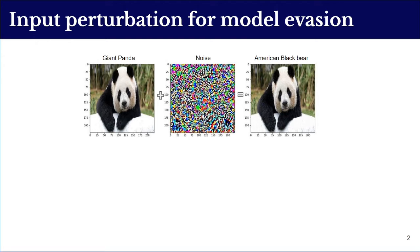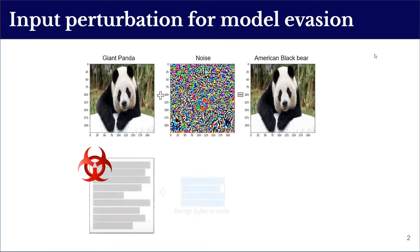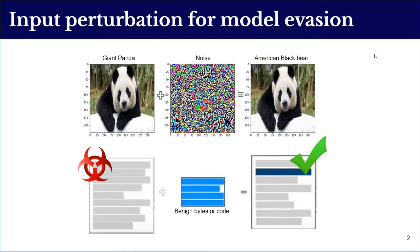Adversarial machine learning has been extensively studied in recent years, and research has shown that even minor input perturbations can lead to successful machine learning evasion attacks. For example, a giant panda can be misclassified as a black bear if an adversary adds studied noise to the input image. The same vulnerability is also observed in machine learning malware detectors — prior works have shown that adding bytes or code to a malicious file can lead to it being misclassified as benign.